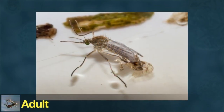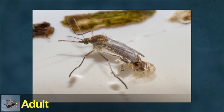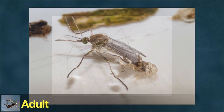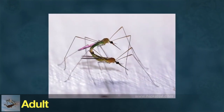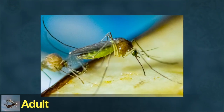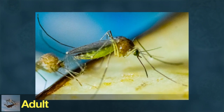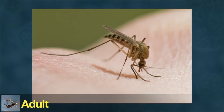After one to four days, the mosquito splits out of the skin it had as a pupa and emerges as an adult. Shortly after, it mates. Both male and female mosquitoes feed on nectar from plants, but females also need to drink blood from animals, such as humans, in order to make eggs.